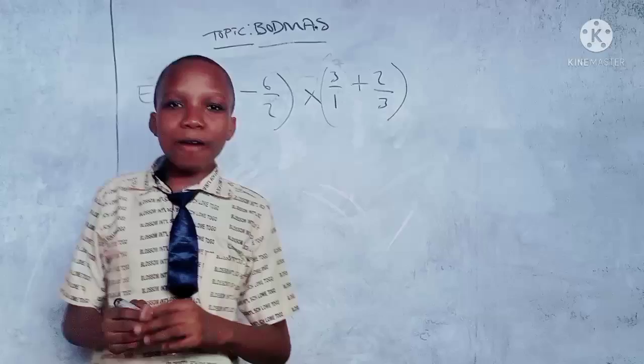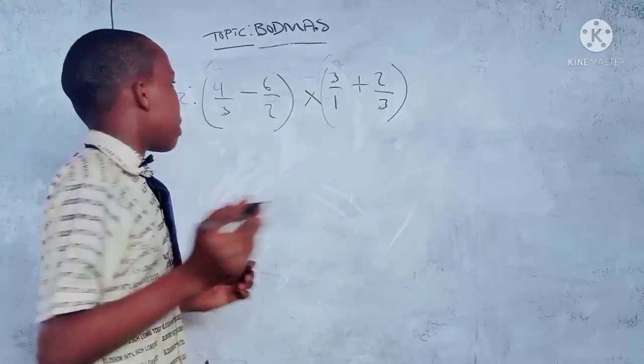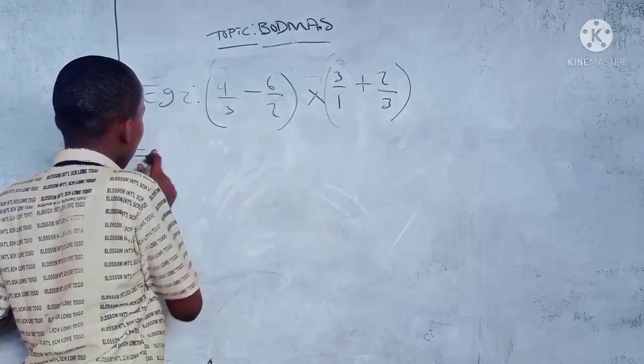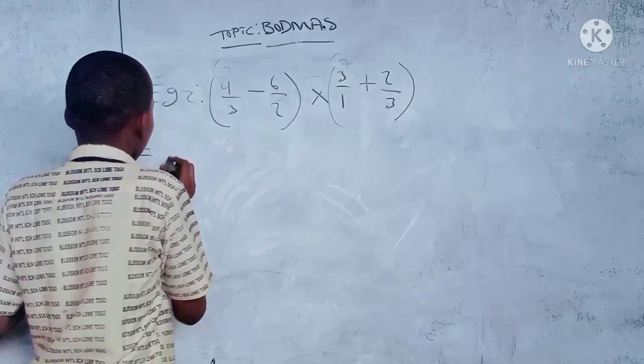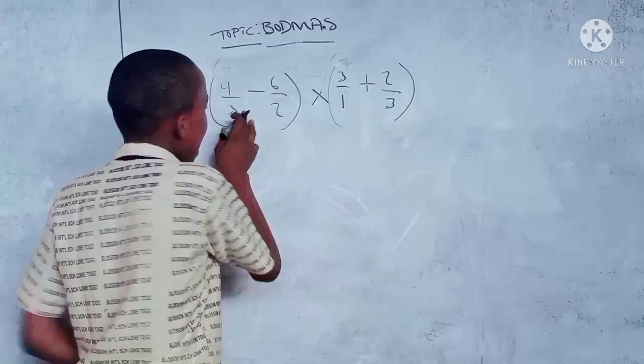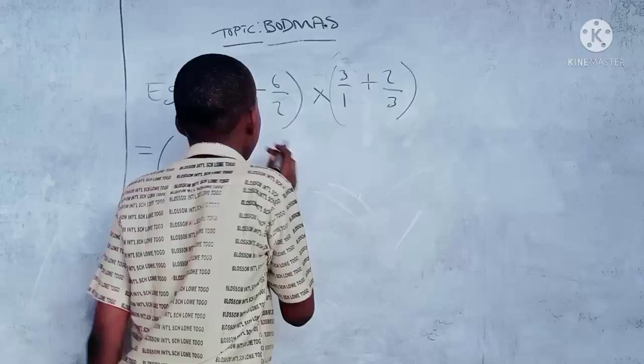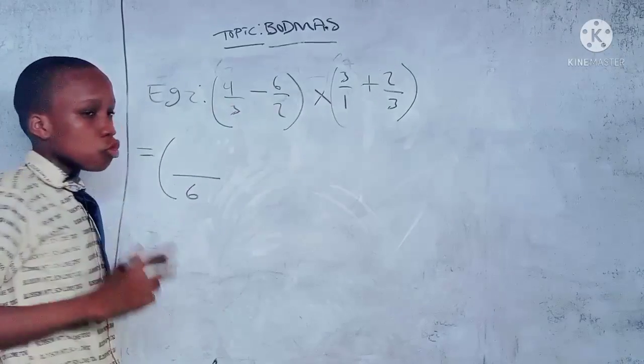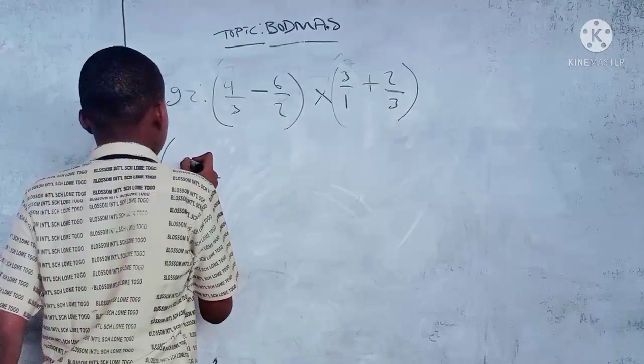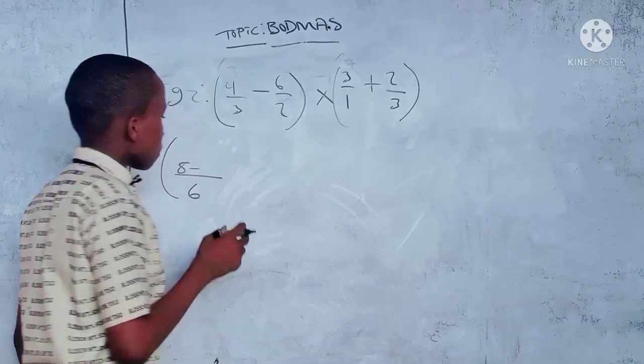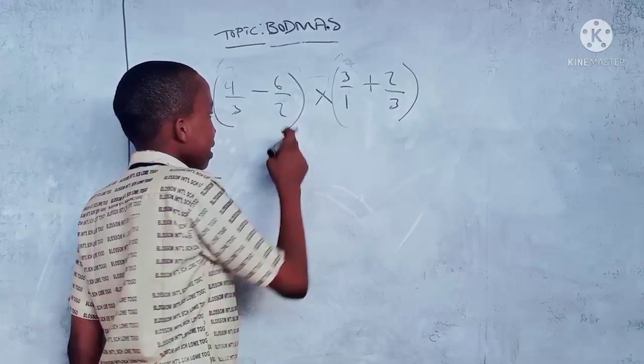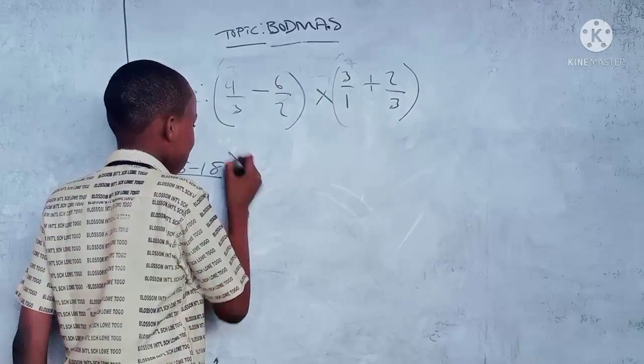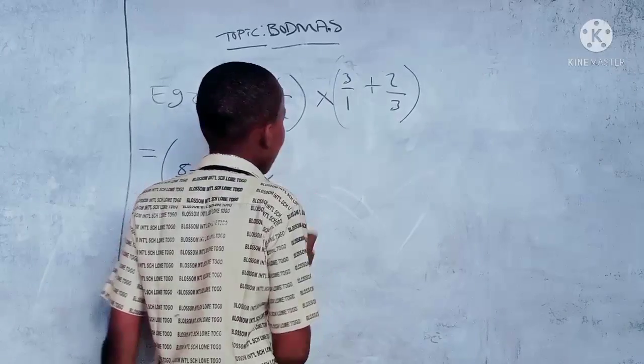If you've finished solving, come see the correct answer. LCM of three and two is six. Six divided by three is two, two times four is eight. Six divided by two is three, three times six is eighteen. First calculation complete, times.